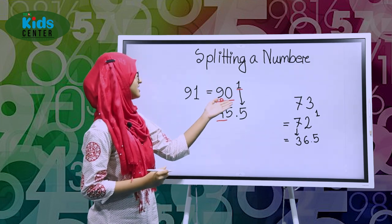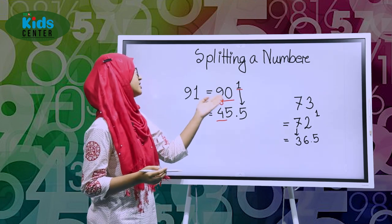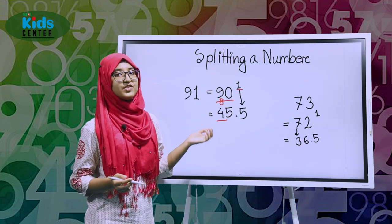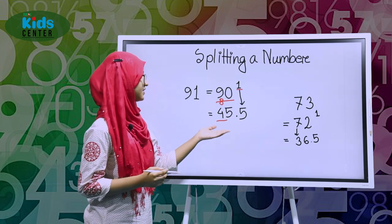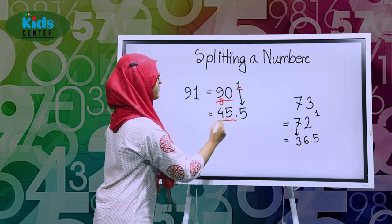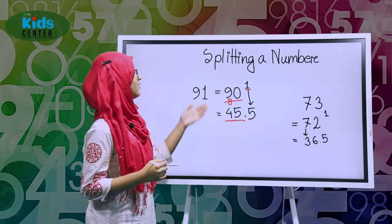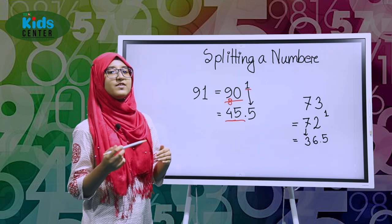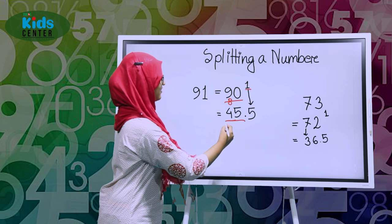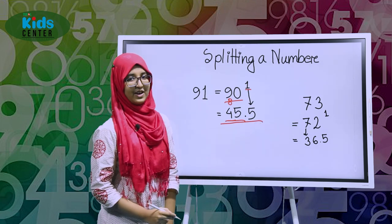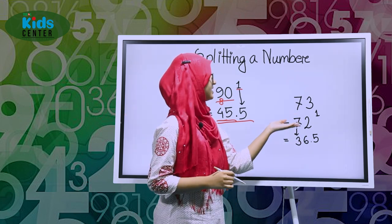Now we get 0, and here is 1 right — so 9 minus 8 gives us 1. When we add this 1 with 0 we will get 10. So 10 divided by 2 is 5. So this is 45, which is the split of 90. And now we got one more, so when we divide 1 we get 0.5. So our answer is 45.5.